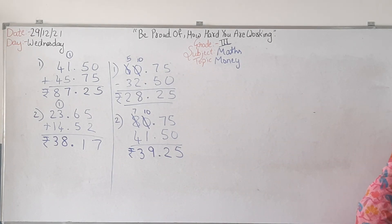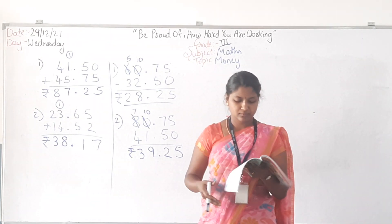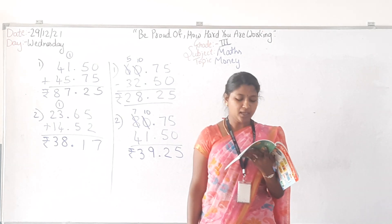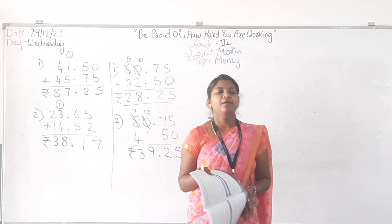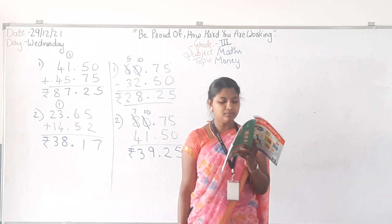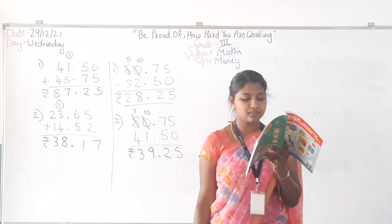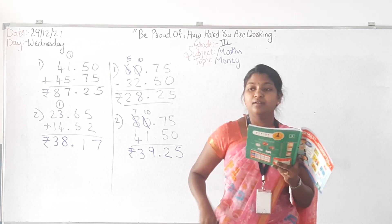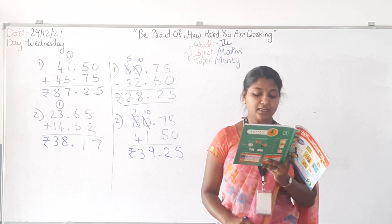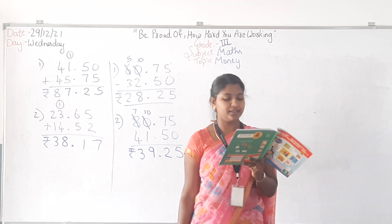Now open your workbook, page number 51. Write today's date. First question: 50 paise plus 50 paise plus 50 paise plus 50 paise equals 150 paise. Option A is the correct answer. Second question: Rupees 20 plus rupees 20 plus rupees 20 plus 50 paise equals rupees 40.50. Option C is the correct answer.